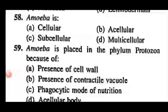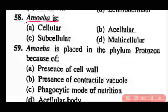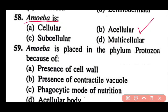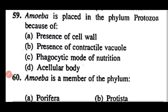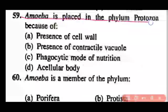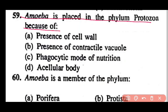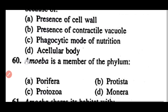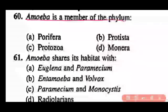Question 58: Amoeba is cellular, acellular, subcellular, or multicellular? Correct answer is option B. Amoeba is acellular, meaning it has no fixed shape. Question 59: Amoeba is placed in phylum Protozoa because of presence of cell wall, contractile vacuole, phagocytic nutrition, or acellular body? Correct answer is option D. Amoeba is placed in Protozoa because it has no definite shape. Question 60: Amoeba is a member of phylum Protozoa (option C).